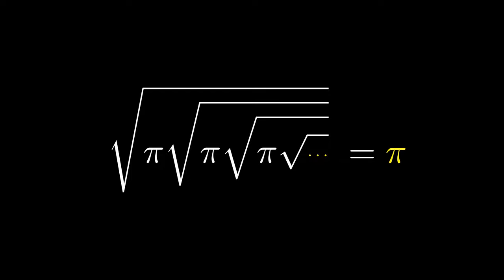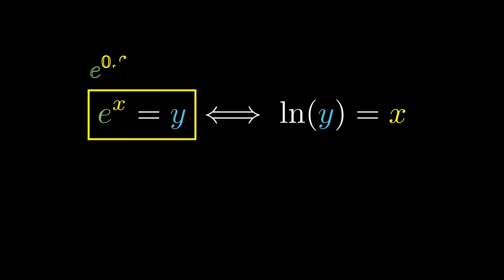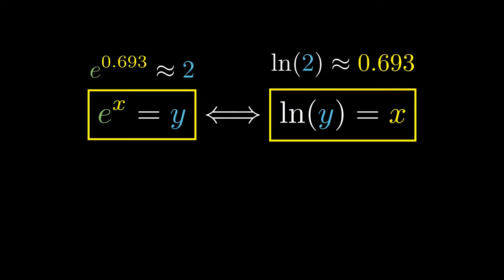Returning to the very first equation, let's suppose that e raised to the x power equals y. An equivalent way of expressing this is to take the natural logarithm, and we say that the ln of y equals x. For instance, e raised to the 0.693 approximately equals 2. Therefore, we say that the ln of 2 approximately equals 0.693.